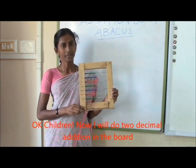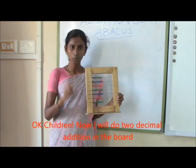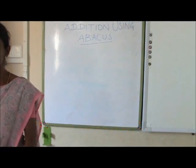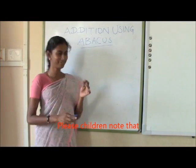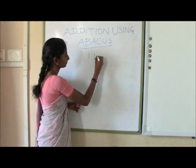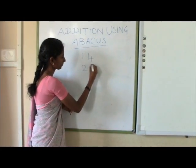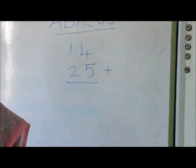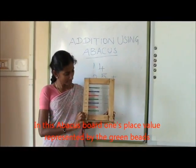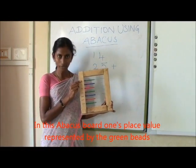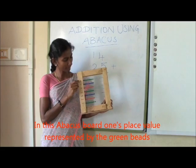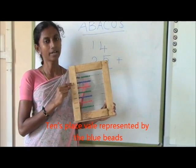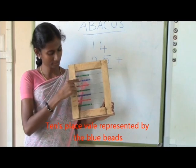Now I will do two-digit addition on the board. Please children, note of it. In this abacus board, the ones place value is represented by the green bits and the tens place value is represented by the blue bits.